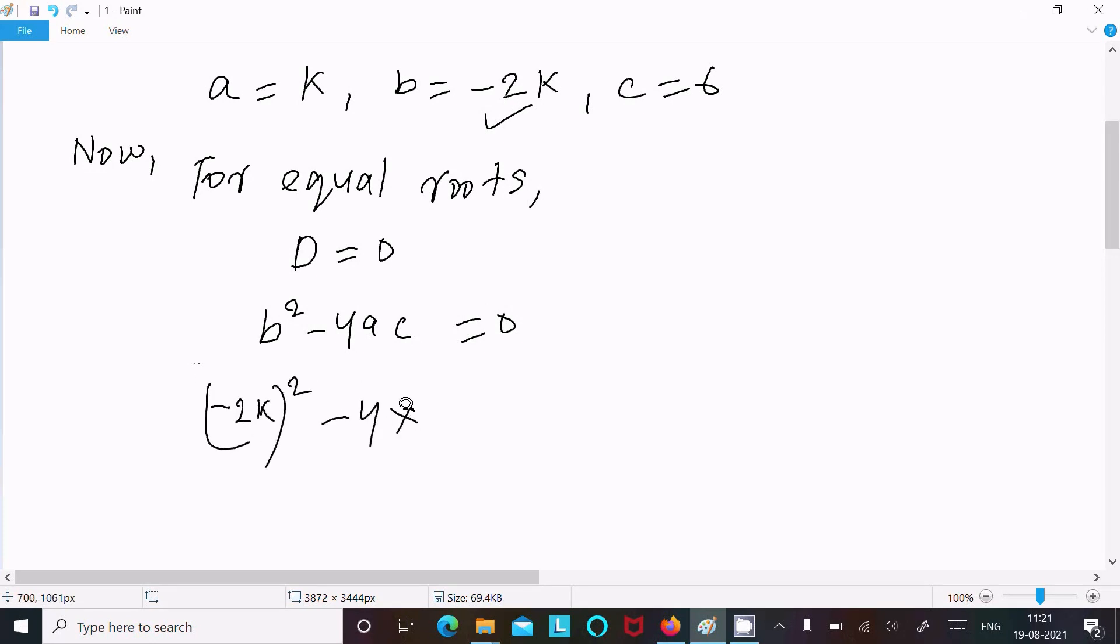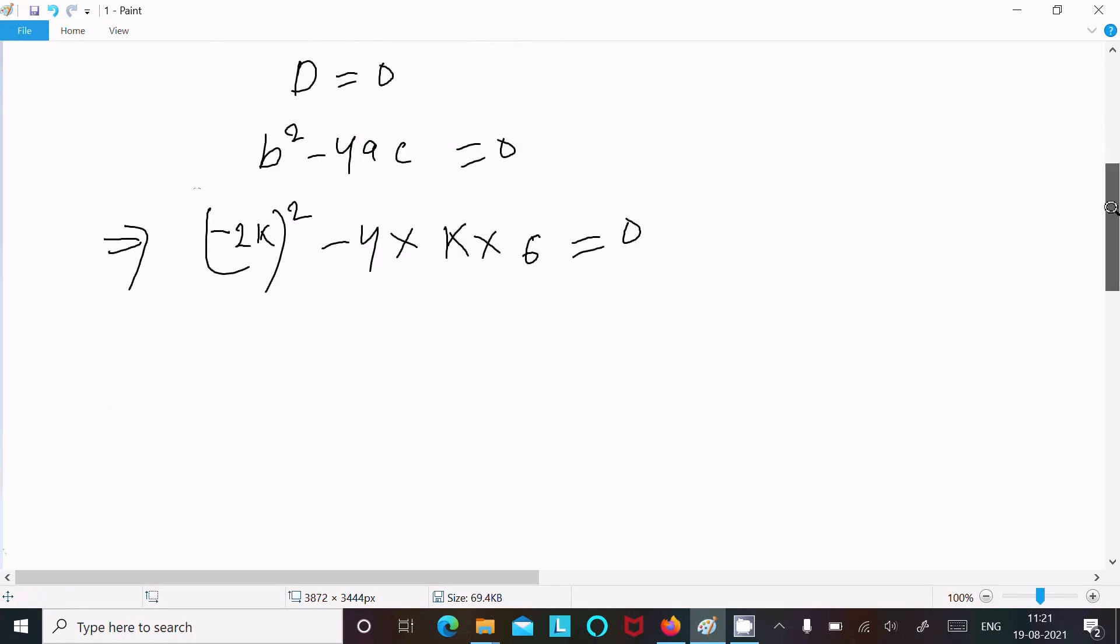Putting in the value of b, we have (-2k)² - 4(k)(6) = 0, which gives us 4k² - 24k = 0.